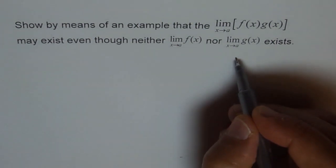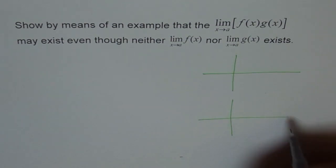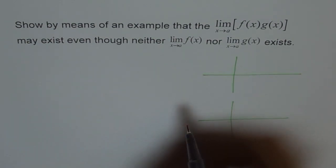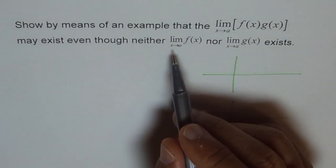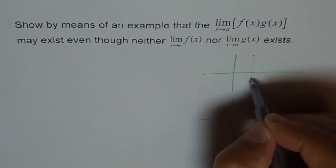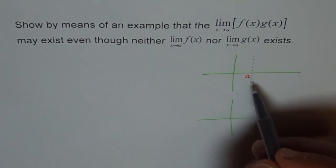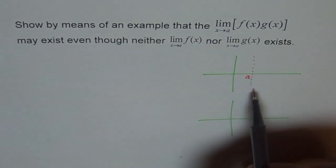Now consider this kind of function. We have to consider two functions, f and g. Let's try to give two functions here. If we design a function at point a, let's say this is my point a. So if we are approaching a, then the function's limit does not exist. That means it could be a step here at a.